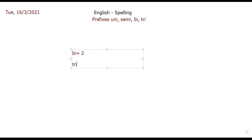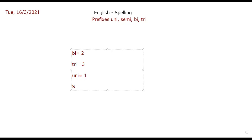When I say tricycle, how many wheels? Three. Excellent, so 'tri' means three. But when I say unicorn — what does 'uni' mean? How much — one, two, or three? One. So 'uni' means one. And when I say 'semi'?